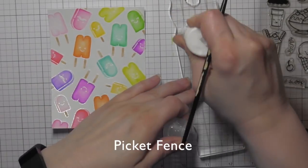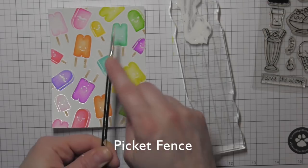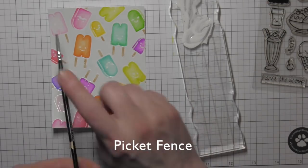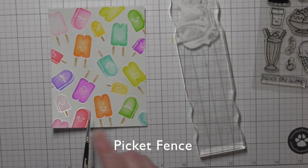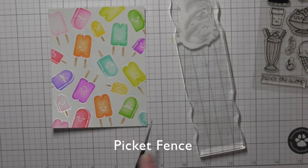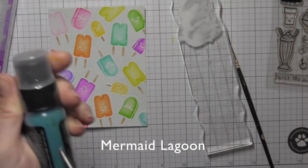Once it's dry, I'm going to squirt a little Picket Fence distress paint on an acrylic block, water it down again so that it's going to flick a little bit easier, and then I'm picking it up with a small paint brush so that I get little splatters and splattering it all over the surface of my project.